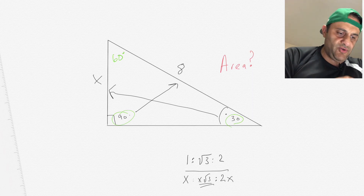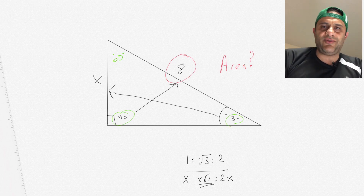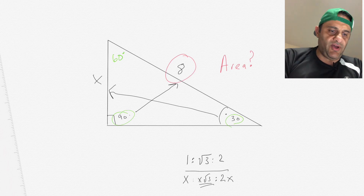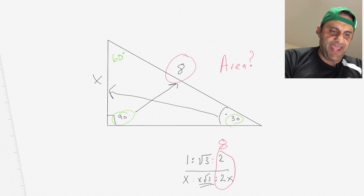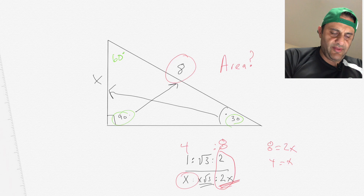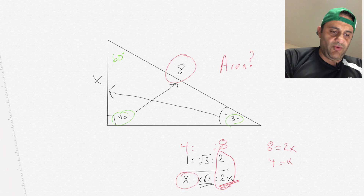This is a ratio you really need to know for geometry. Back to this triangle: the hypotenuse is 8. They give you one side — the hypotenuse — and one angle, which is 30, and you can calculate the last angle as 60. Going back to the ratio, 8 equals 2X, so X equals 4. That makes sense — 4 is half of 8.